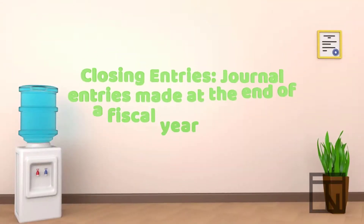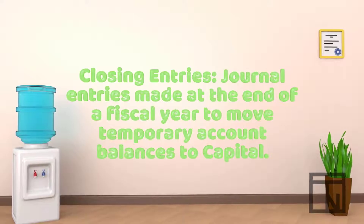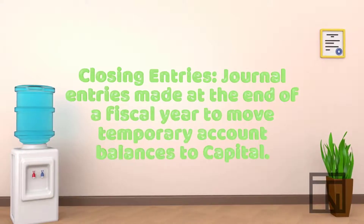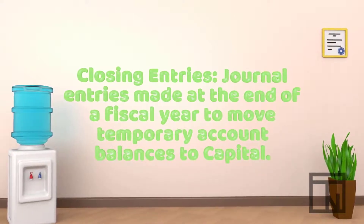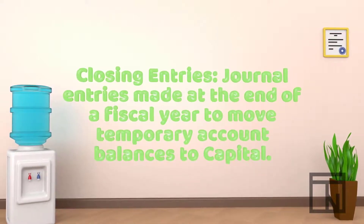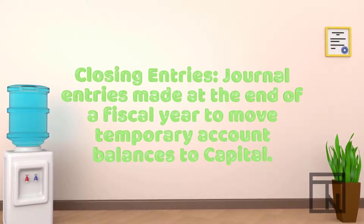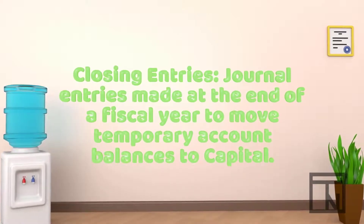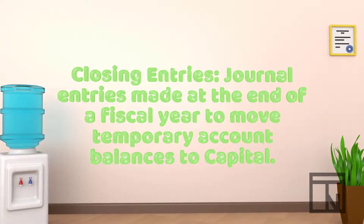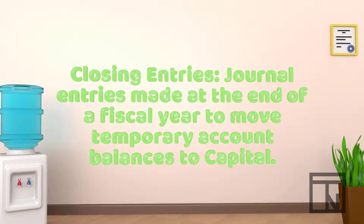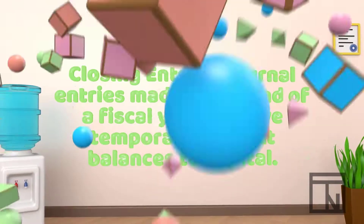The process of preparing accounting records for a new year involves clearing out the temporary accounts and moving all of their balances to capital. This is done through a series of journal entries known as closing entries. Let's look at the process of creating the closing entries using an example.